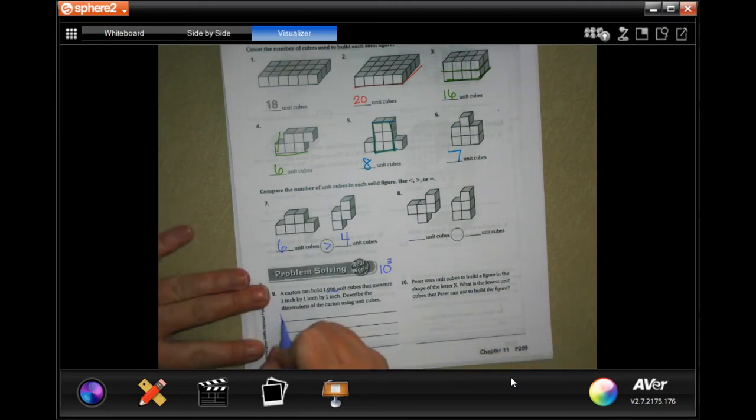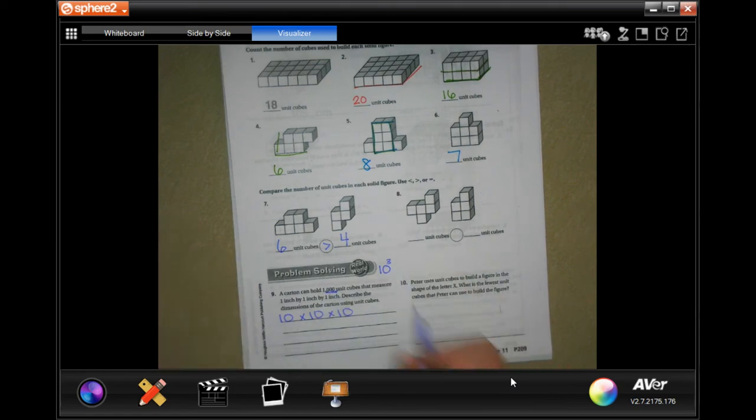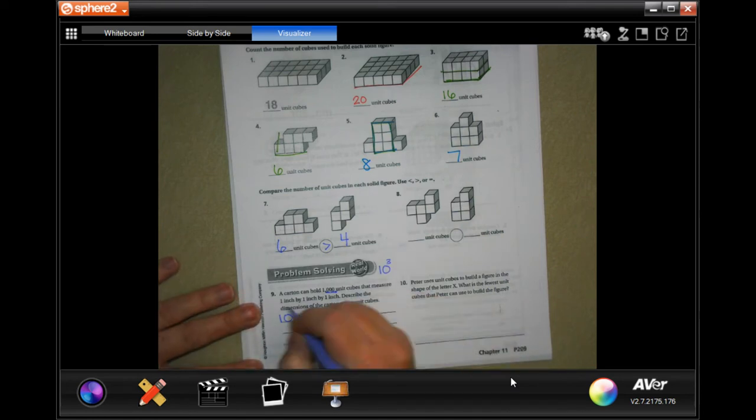Which means 10 by 10 by 10, and that is the length, width, and height. That would give us our 1,000. So 10 inches by 10 inches by 10 inches.